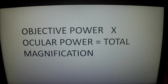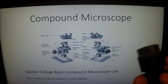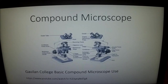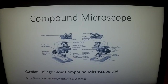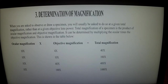You've got your objectives and your oculars. Your oculars on your scope are 10x, which means they magnify an object 10 times. You take the magnification of the ocular times the magnification of the objective to get your total magnification. Here's a chart: 10x ocular with a 4x objective gives 40x total; 10x with 10x gives 100x; 10x with 40x gives 400x; 10x with 100x gives 1000x.